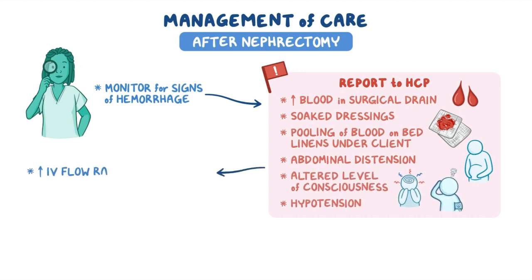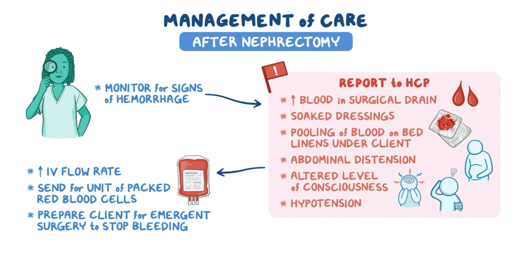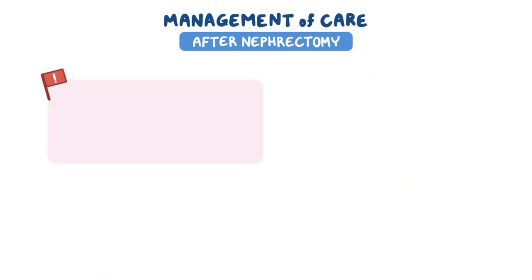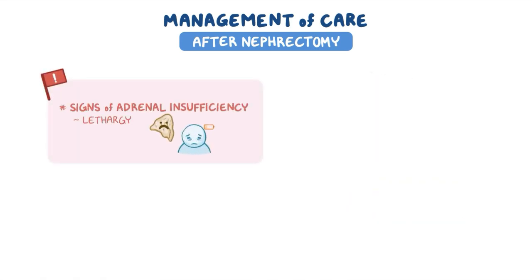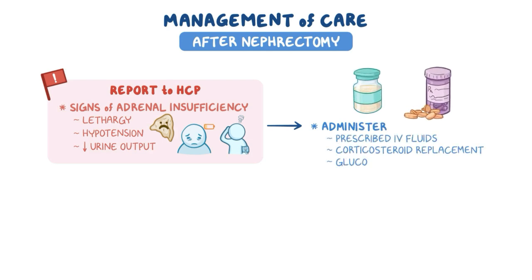Increase the IV flow rate and send for a unit of packed red blood cells per protocol, and prepare the client for emergent surgery to stop the bleeding as directed. Also watch closely for signs of adrenal insufficiency, including lethargy, hypotension, and decreased urine output, and report these findings to the healthcare provider. Administer the prescribed IV fluids, corticosteroid replacement, and glucose.